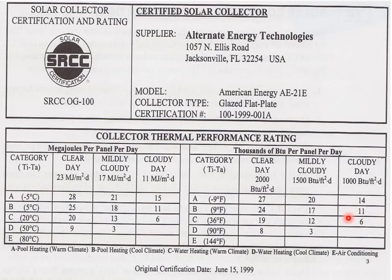The next two columns give the expected heating for mildly cloudy and cloudy days. Row B is for pool heating in a cold climate. Row C is for water heating in a cool climate. Row E is for air heating but has no values.